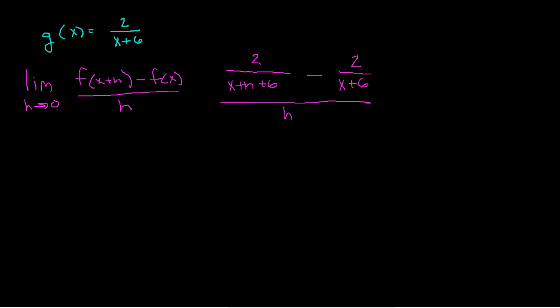A lot of students struggle with these ones, but they actually work out really nicely. First, I hate double fractions, so leave the numerator alone. Instead of dividing it all by h, I'm going to multiply by 1 over h — it's mathematically the same thing, but this gets rid of the double fraction.